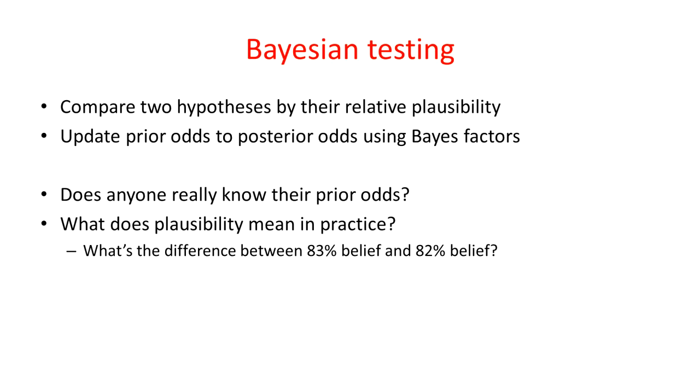The problem here, though, is that does anyone really know what their prior odds are? We can make a rough guess about them, but it is very hard to be precise about our prior odds. And in practice, what does it mean to talk about plausibility or belief in the hypotheses? What actually is the operational difference between 83% belief and 82% belief? How are we supposed to interpret that in practice?